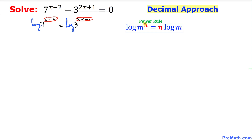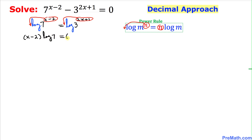Using the power rule, which states that log of m power n allows us to bring n to the front, we move the exponent (x minus 2) to the front on the left and (2x plus 1) to the front on the right. We can write this as: (x minus 2) times log of 7 equals (2x plus 1) times log of 3.